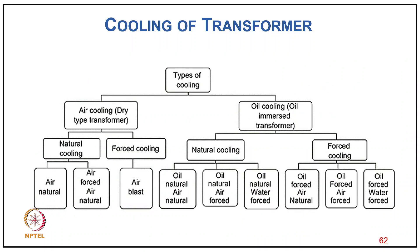Types of cooling for transformers: for dry-type transformers, natural air cooling (AN) or forced air cooling (AF/air blast). For oil-immersed transformers: natural oil cooling (ONAN), oil natural air forced (ONAF), oil natural water forced (ONWF), oil forced air natural (OFAN), oil forced air forced (OFAF), and oil forced water forced (OFWF). As the rating increases, more sophisticated cooling is required.